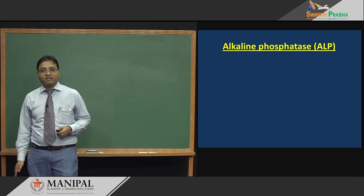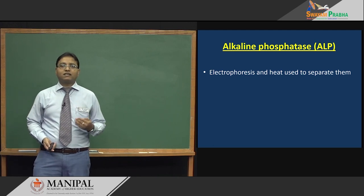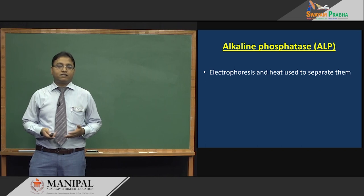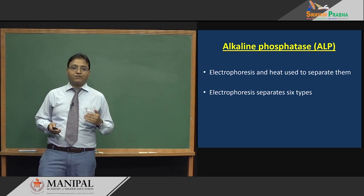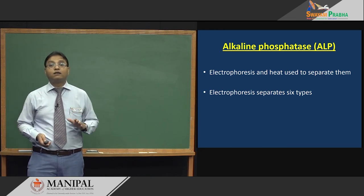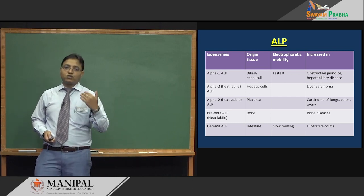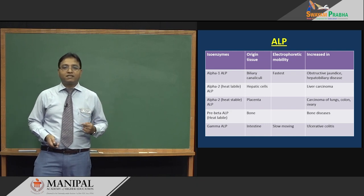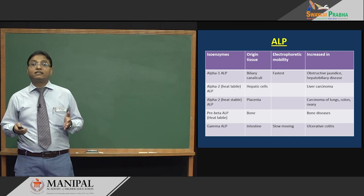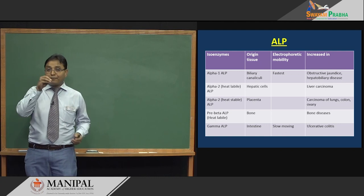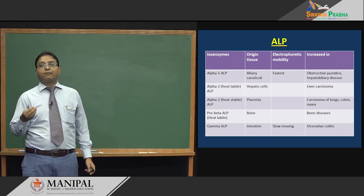The last example is alkaline phosphatase (ALP). ALP can be separated by two methods: electrophoresis and heat. Electrophoresis separates 6 types of ALP, of which 5 are clinically important. The first is alpha-1 ALP, present in biliary canaliculi, which moves the maximum distance in electrophoresis. Increased alpha-1 ALP is seen in obstructive jaundice and hepatobiliary disease.